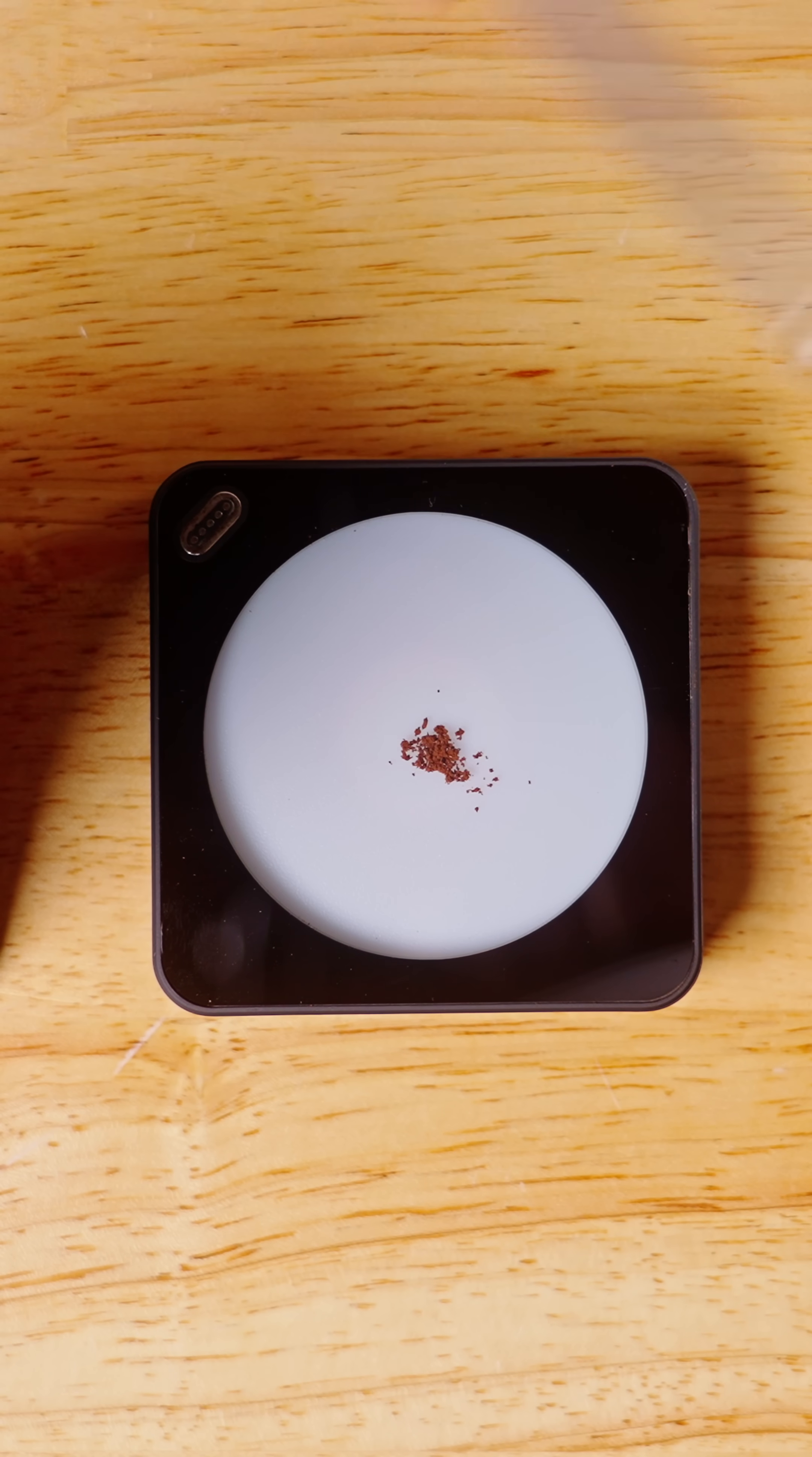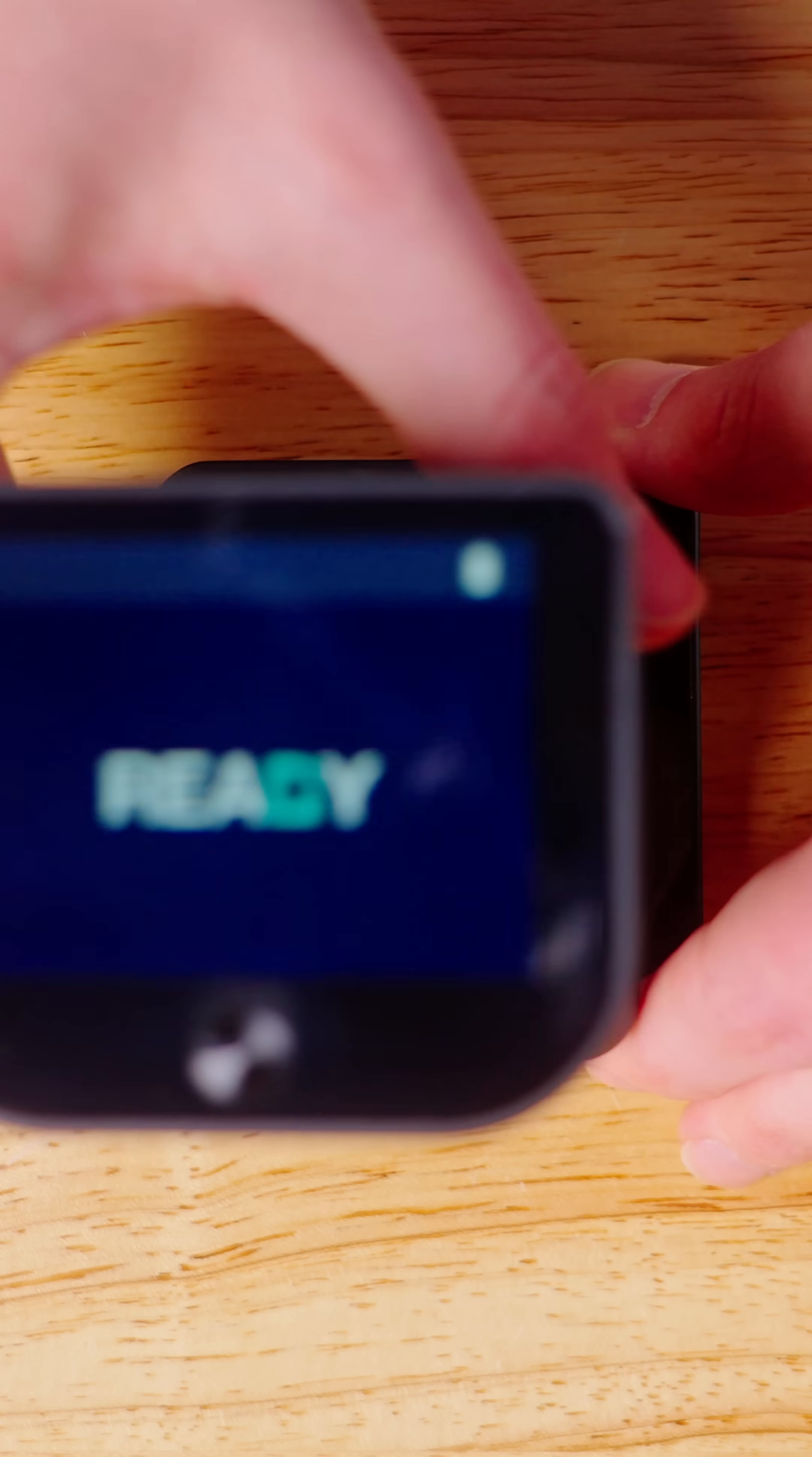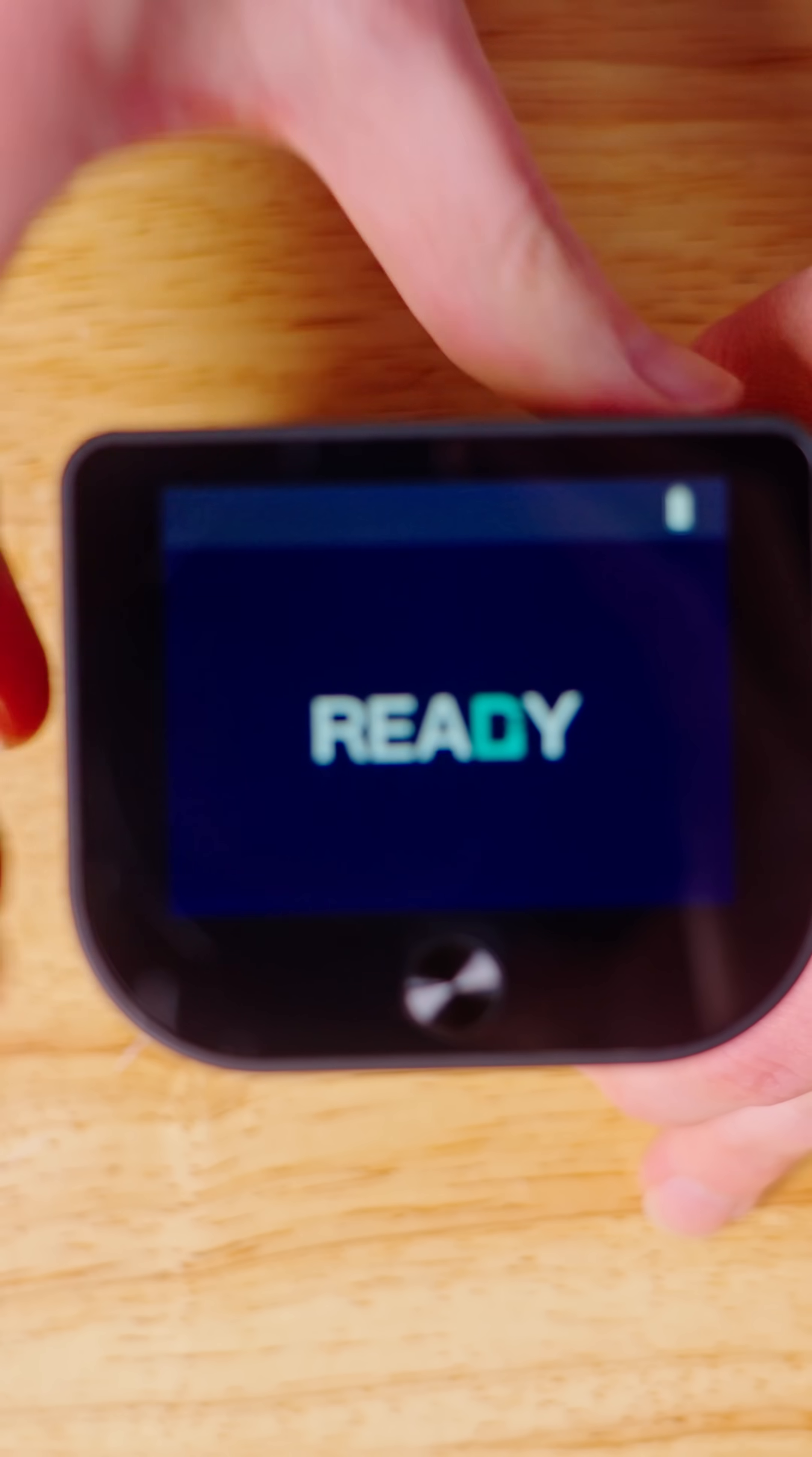After giving the sample a few vibrations to evenly distribute it, the device then uses its camera and lights to count every tiny particle on the tray and then sorts them by particle size.